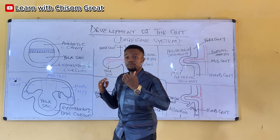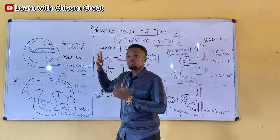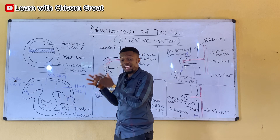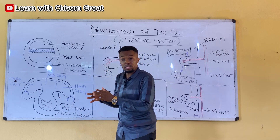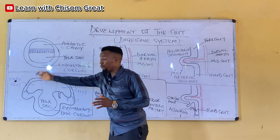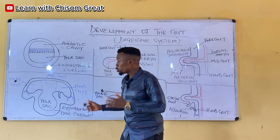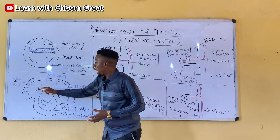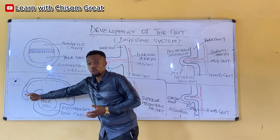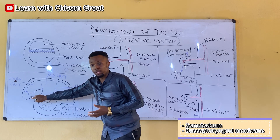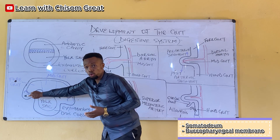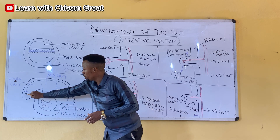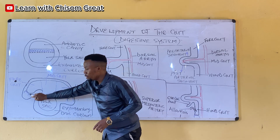The gut is divided into three parts, and it is the gut that actually gave rise to the digestive system — both the accessory and the main digestive organs. They all develop from either the foregut, the midgut, or the hindgut. The foregut lies at the cranial part, and it is separated from the stomodeum by the buccopharyngeal membrane.